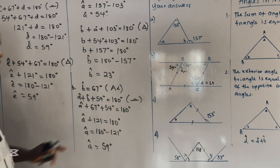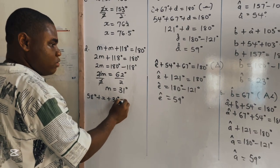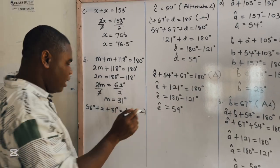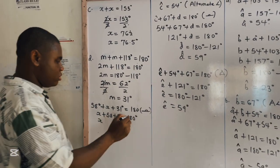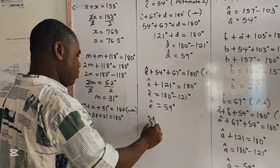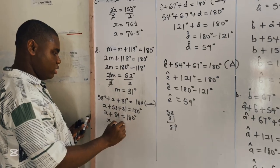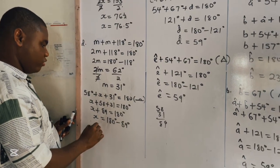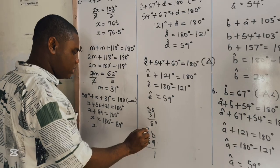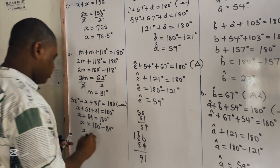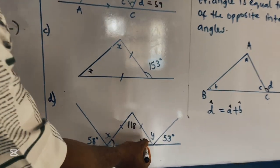Now we can find X. We have 58 degrees plus X plus M, which is 31 degrees, equals 180 degrees — angle on a straight line. So X plus 58 plus 31 equals 180 degrees, meaning X equals 180 minus 89, which gives X equal to 91 degrees.